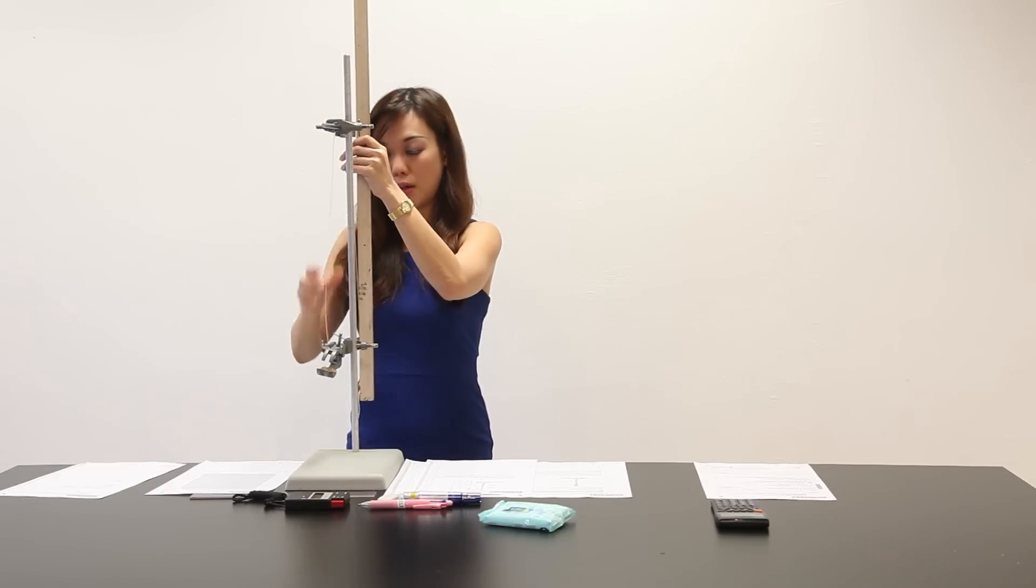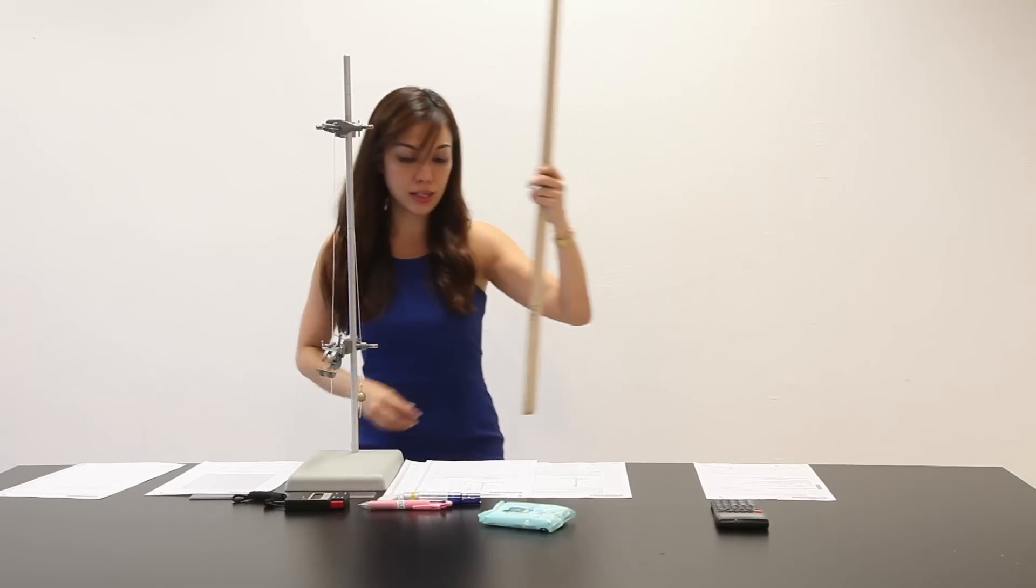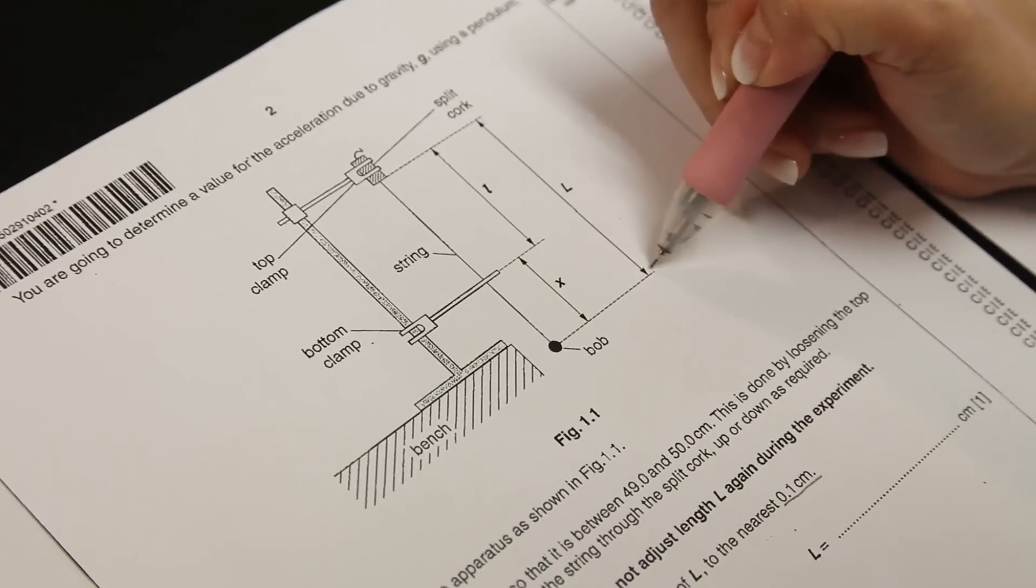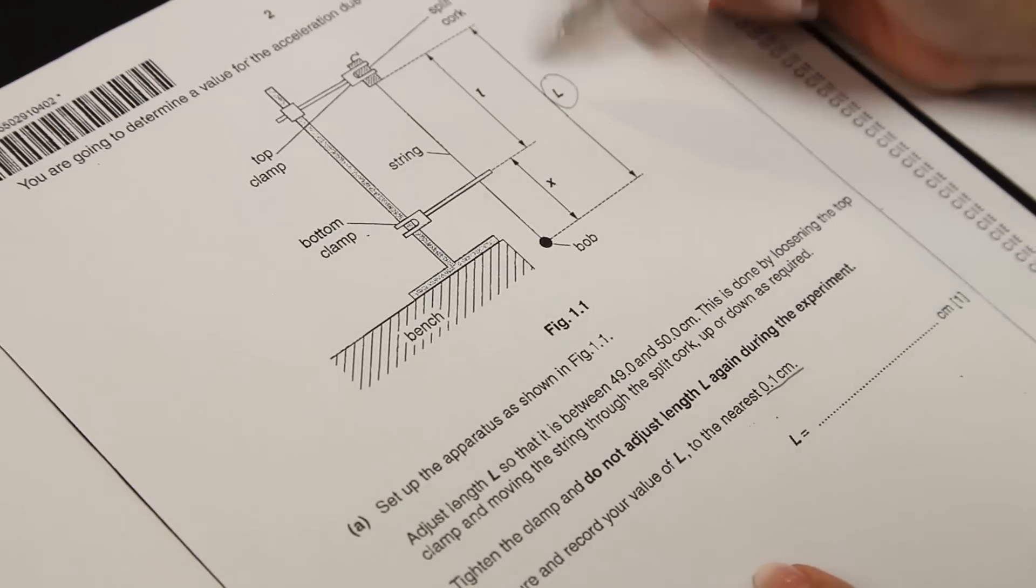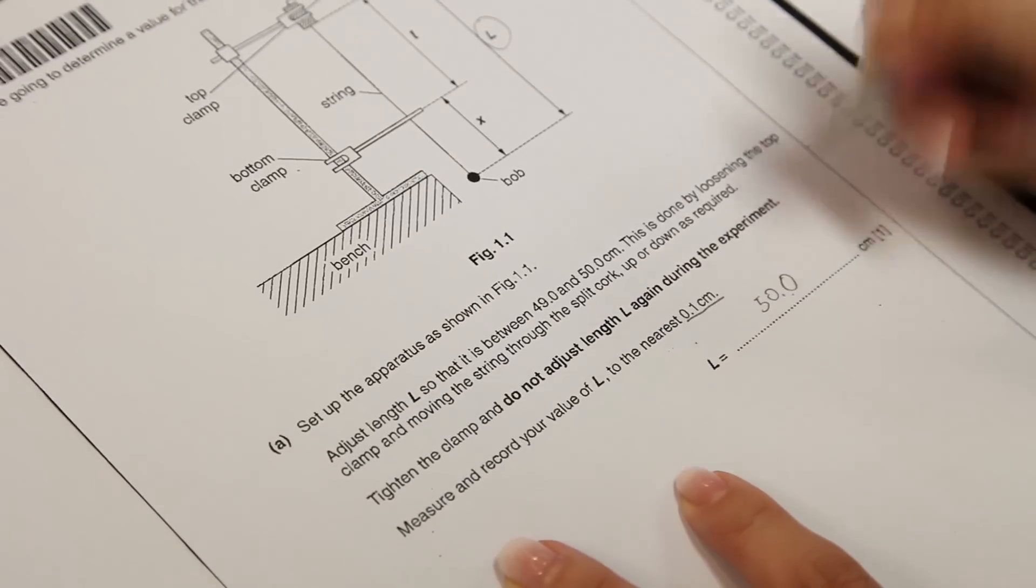50 mark over here, all the way down to this portion. Yep, I have adjusted it. And let me record the reading. It says here, to the nearest 0.1 cm. So, it should be 50.0. So, let's take note of the decimal place that was given.